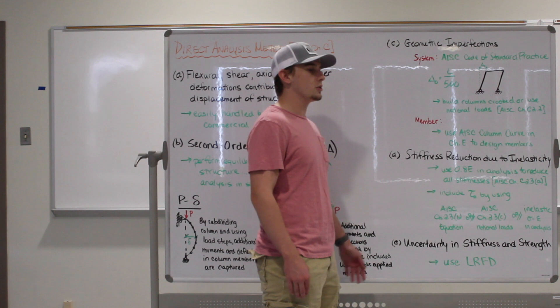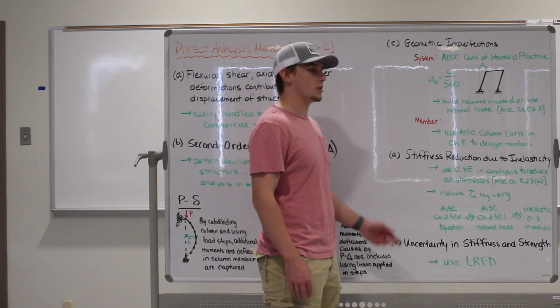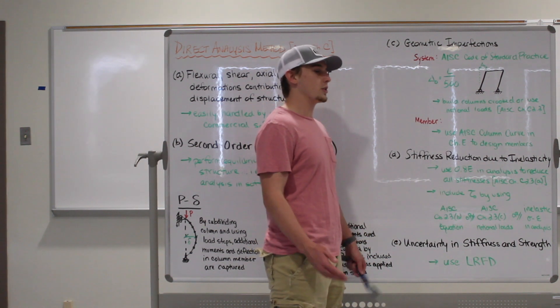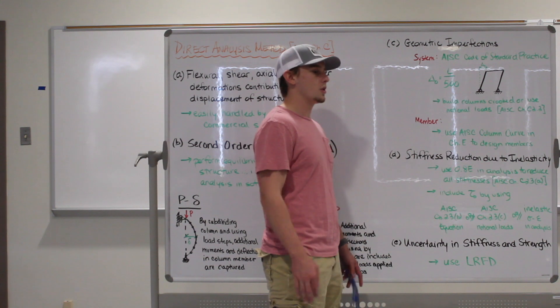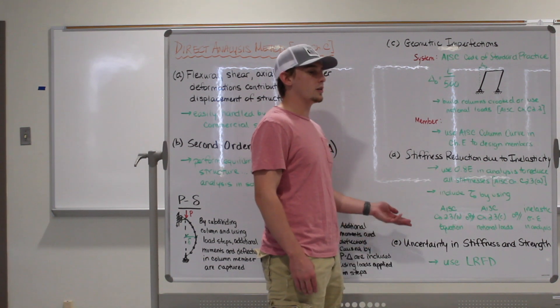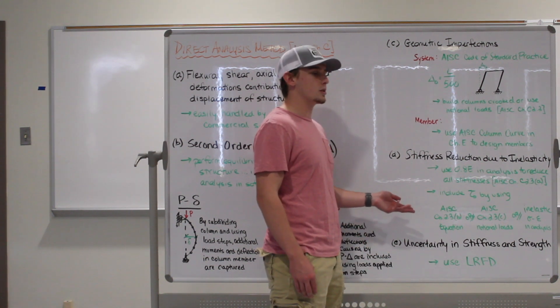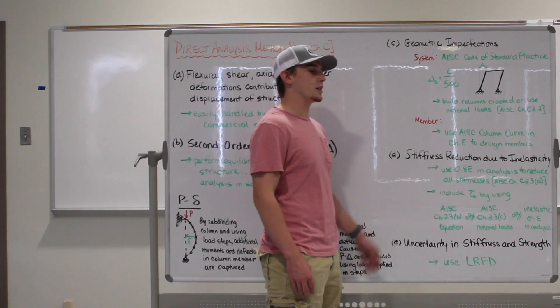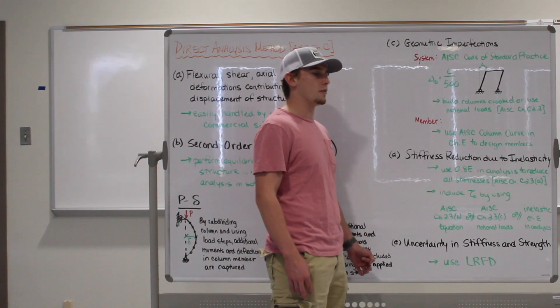We could use this tau factor directly given to us in chapter 2.3, or we could include an additional notional load. Or, like we did in class, we ran our analysis with a non-linear material option that will automatically reduce the stiffness as we got closer to FY.